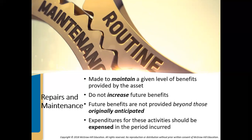Repairs and maintenance maintain a given level of benefits provided by the asset — not increasing the level, just keeping it where it's at. They do not increase future benefits, and future benefits are not provided beyond those originally anticipated. We are just keeping things the same with repairs and maintenance, and for any such expenditures we simply expense them in the period incurred.